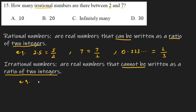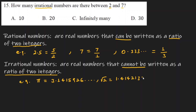Examples of irrational numbers include Pi. Radical 2 (√2) is also an irrational number — it cannot be written as a ratio of two integers.